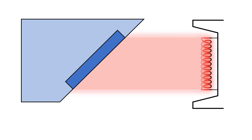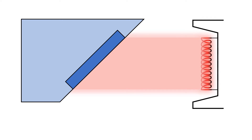There are three things that influence the size of the incident electron beam. One is the width of the filament coil. Two is construction of the focusing cup. And three is position of the filament inside of the focusing cup.